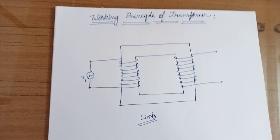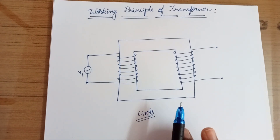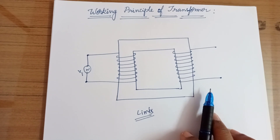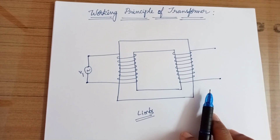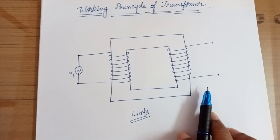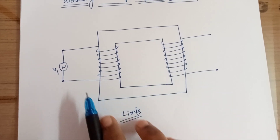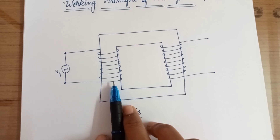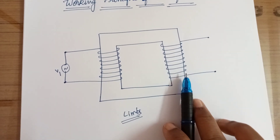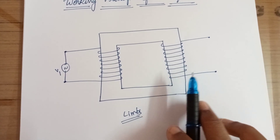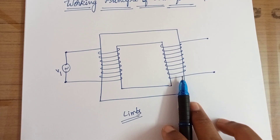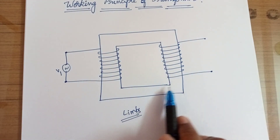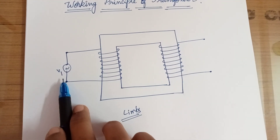Here we consider a supply voltage V1. It is not mandatory that one particular side has to be the primary winding — whichever side you connect the supply to will be considered the primary winding. Here we have connected the supply on this side, so this winding is called the primary winding. On the other side, where you connect the load, that winding is called the secondary winding. The entire inner area is called the core.